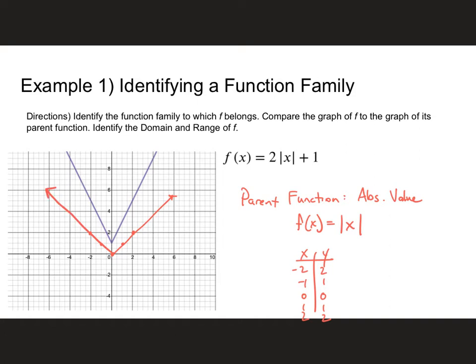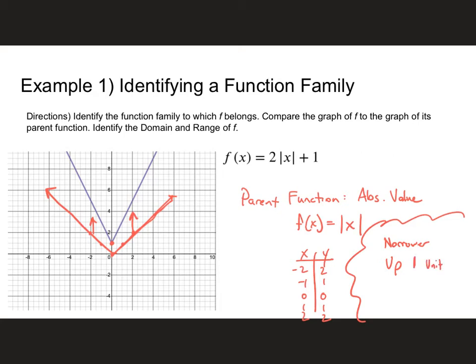Now we need to compare f of x equals two times the absolute value of x plus one to the parent function. How are they the same and different? They're both absolute value graphs. Looking at the graph, the blue line looks narrower than the parent function. It also looks like it's been shifted up — the vertex was at zero, zero on the parent, but here it's at zero, one. So it went up one unit and became narrower.